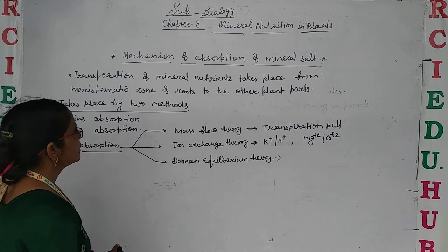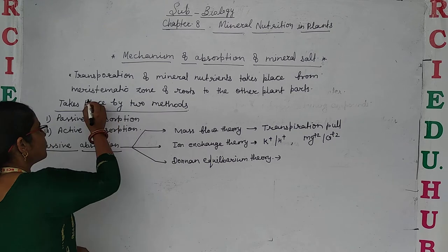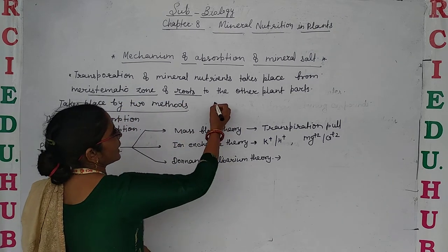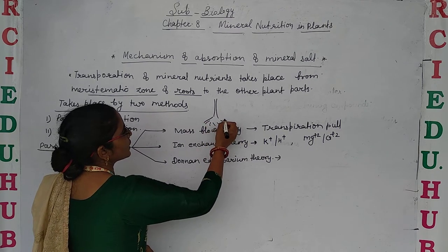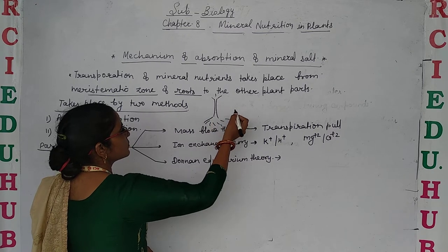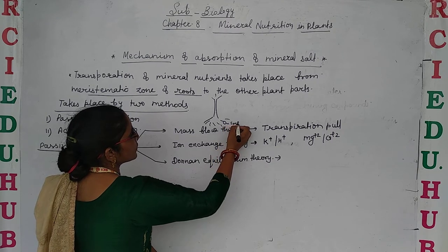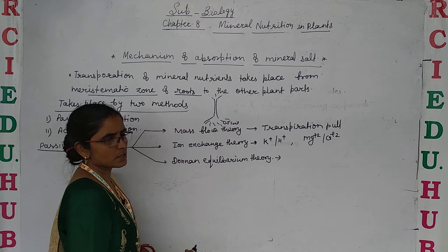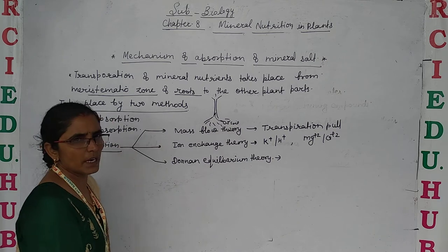Transportation of mineral nutrients takes place from the meristematic zone of the roots to the other plant parts. As we know, these are the roots — they have root hairs — and then stem, branches, leaves, etc. The meristematic zone, which is in close contact with the soil, first absorbs the mineral nutrients through different processes and then transports them to the other plant parts.